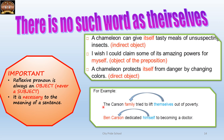For example, 'The Carson family tried to lift themselves out of poverty' — 'themselves' is used for the family because family is a plural noun. If you remove 'themselves,' the sentence loses its meaning — 'The Carson family tried to lift whom?' requires 'themselves' for completeness. 'Ben Carson dedicated himself to becoming a doctor' — 'Ben Carson dedicated whom?' is answered by 'himself.' Important point: reflexive pronouns are always objects — they can never act as subject and form an integral necessary part of the sentence.